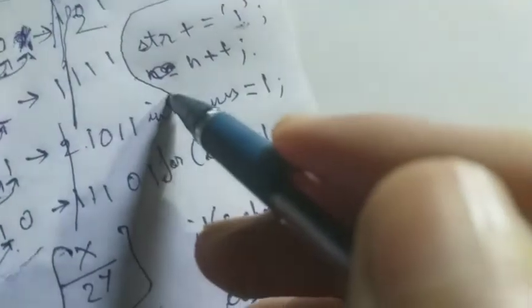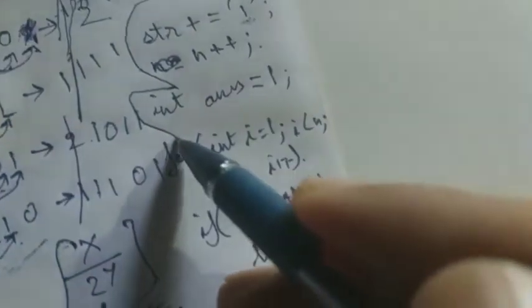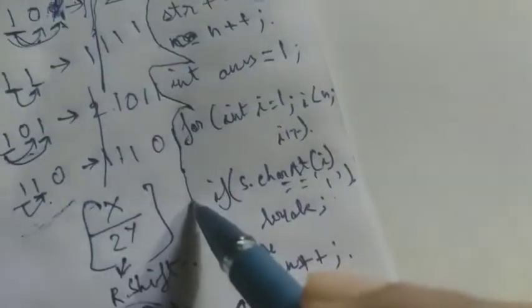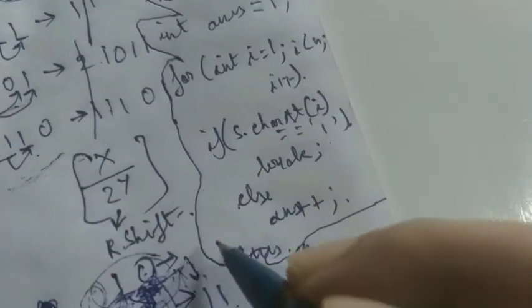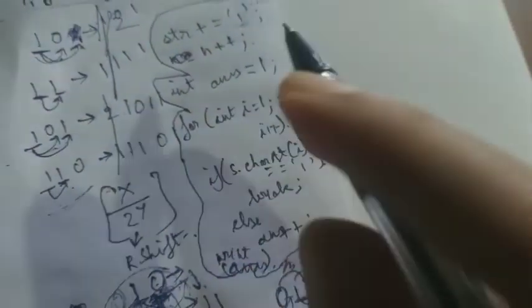This is the code for this. Print the answer. So this is the code for this. That's the explanation, simple explanation. Thank you.